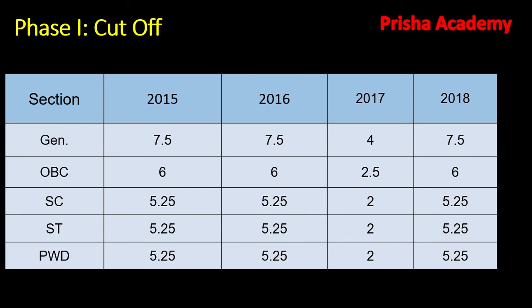Keeping this cutoff in mind, my objective is that you should aim to get at least 10 marks in the quantitative section. I'll tell you how you will get those 10 marks, and how you can get more than 10. Whatever kind of paper it will be, you should be in a position to get at least 10 marks. If you watch this video till the end, I'm damn sure that nobody can ever fail you in the quantitative section.